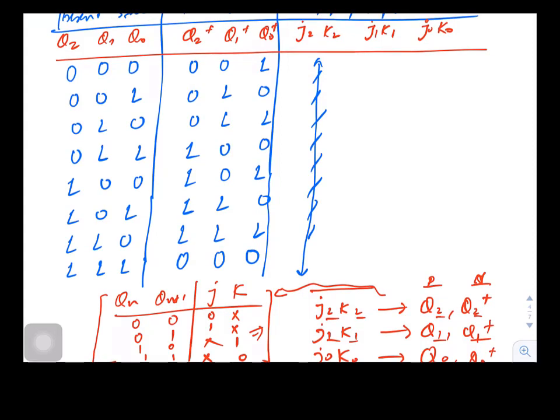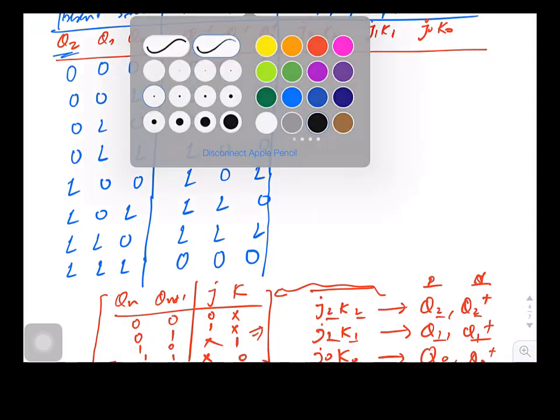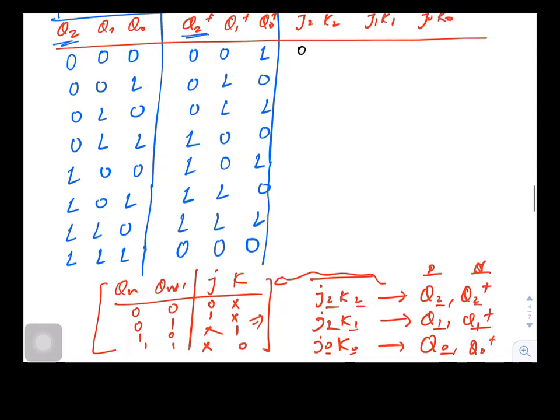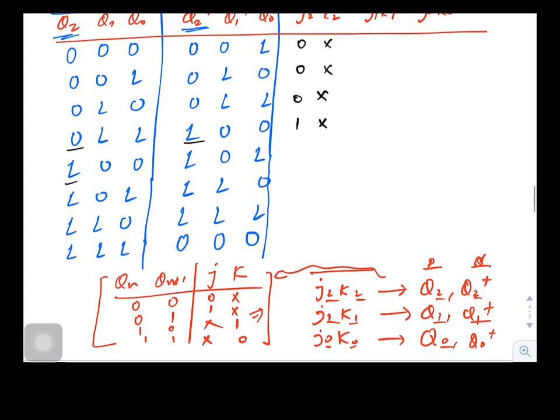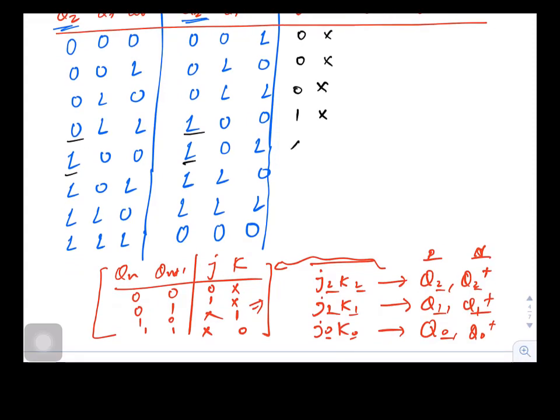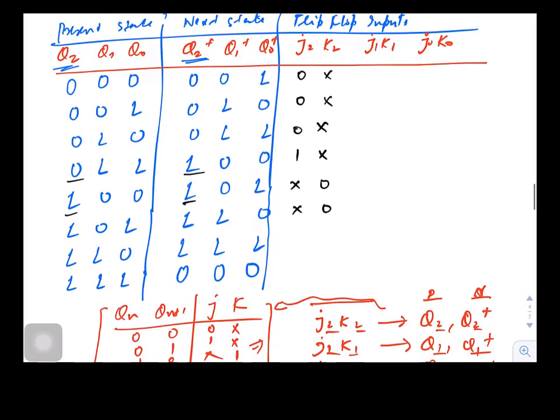Now we will start filling this table of J2 K2, and I would be looking at Q2+ and Q2 only. So let us start: 0 0 is 0 cross, 0 0 is 0 cross, 0 0 is 0 cross, then 0 1, 0 and 1 is 1 cross, then 1 and 1, 1 and 1 is cross 0. So I will finish this table and then we will continue.